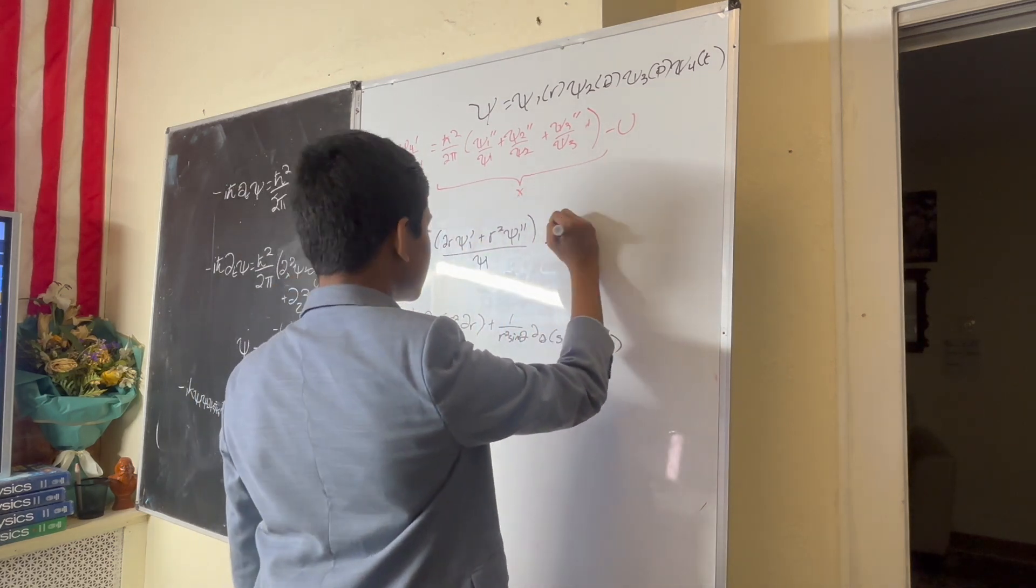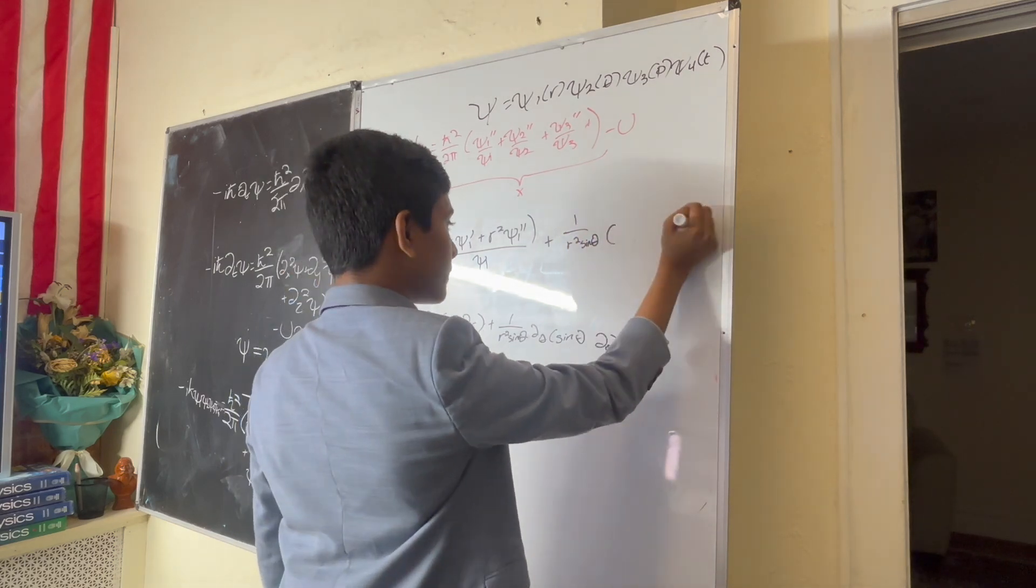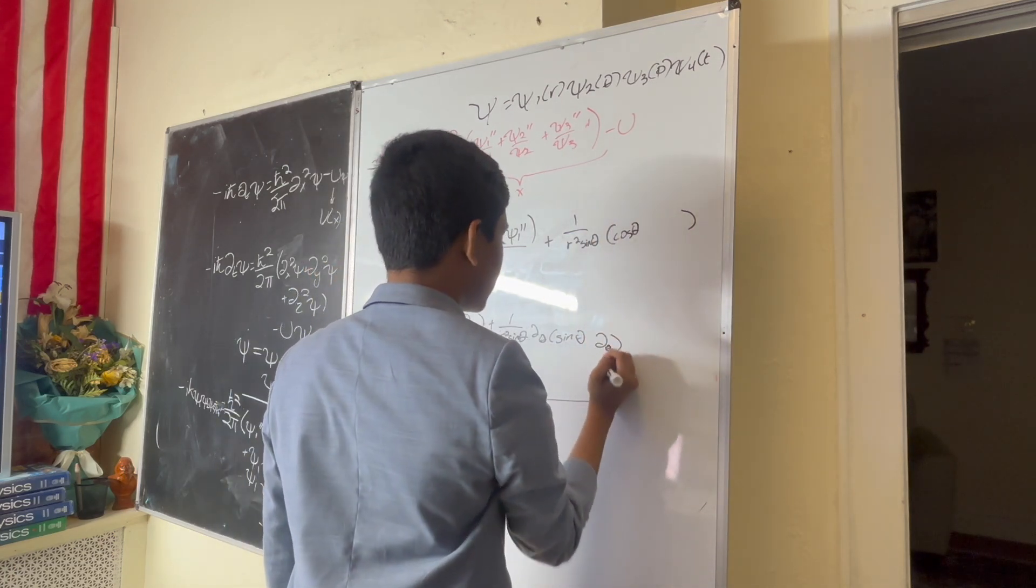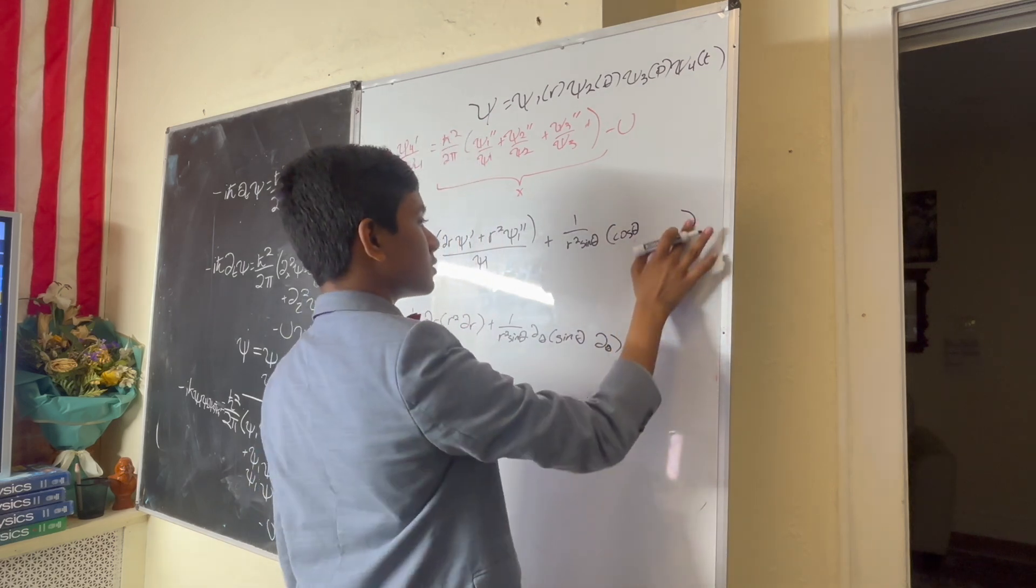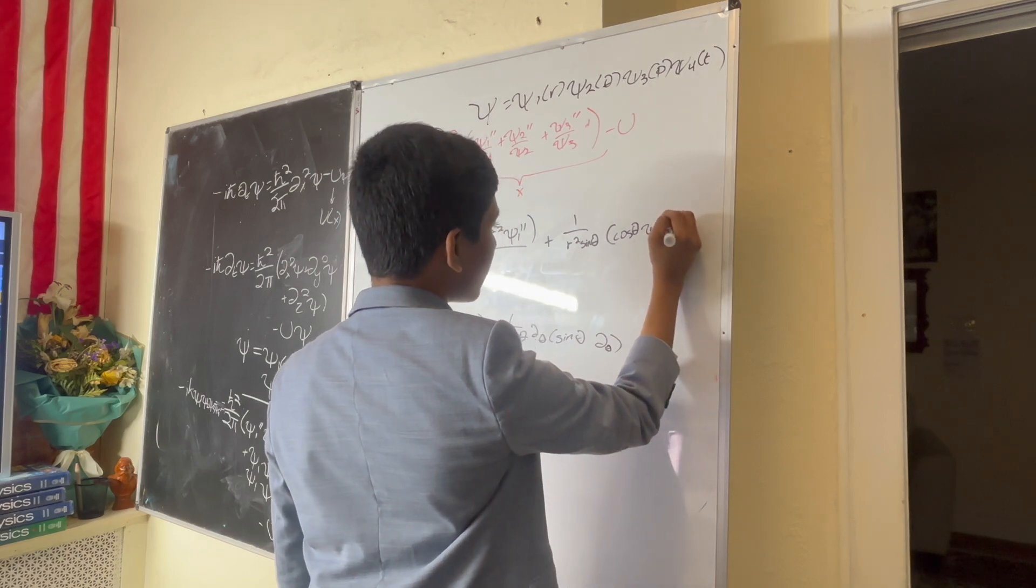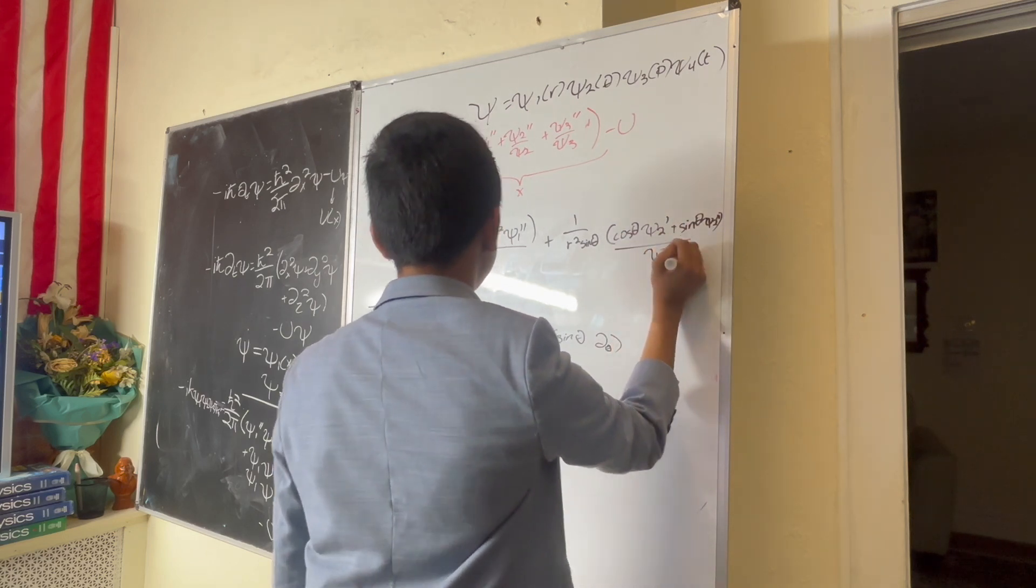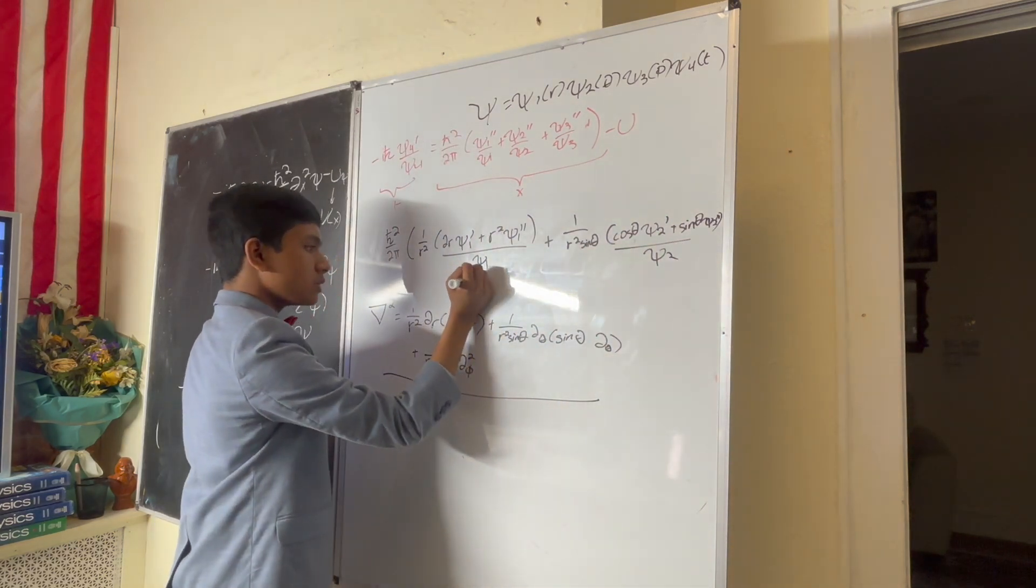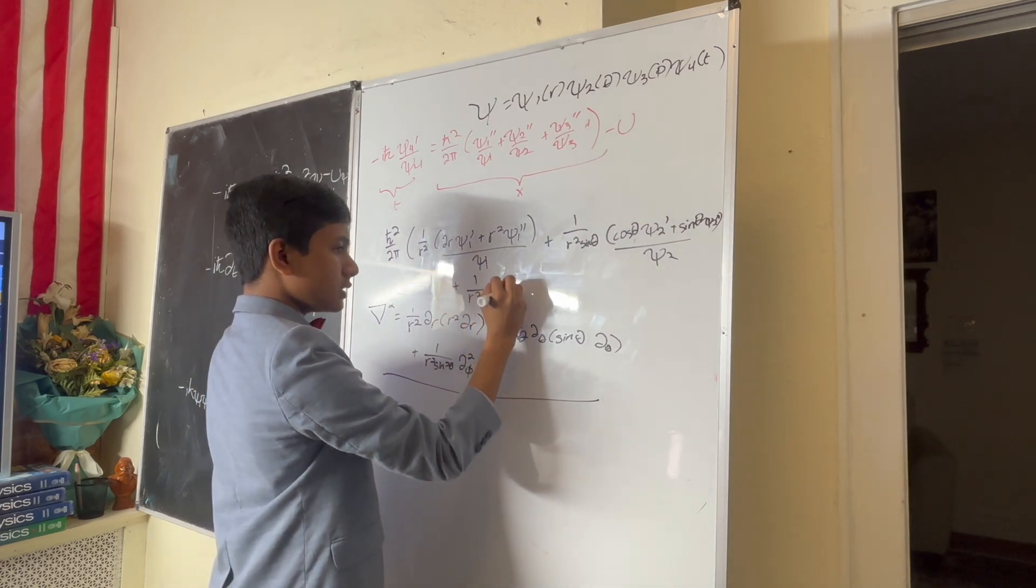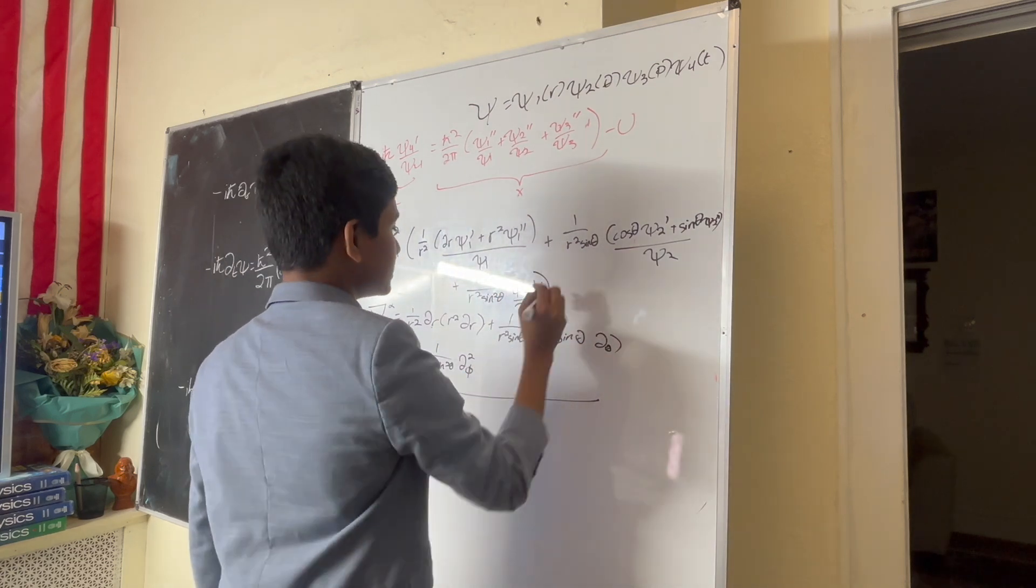So, plus 1 over r squared sine theta, cosine theta psi 2 prime plus sine theta psi 2 double prime over psi 2, plus 1 over r squared sine squared theta psi 3 double prime over psi 3, is equal to a constant.